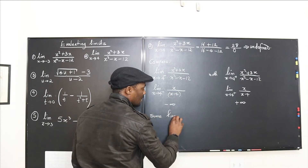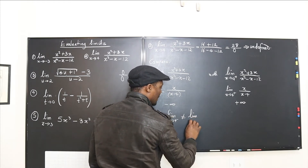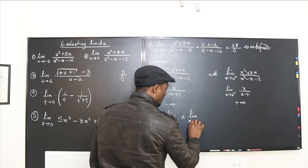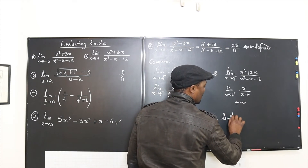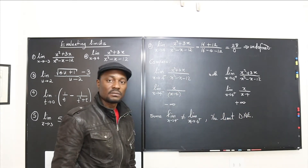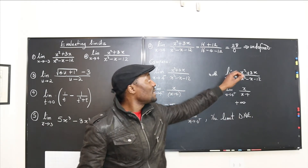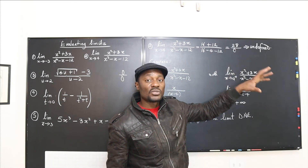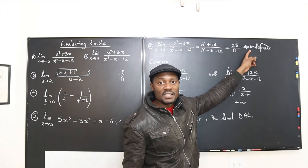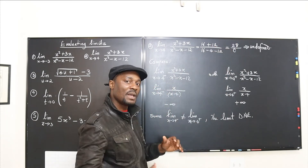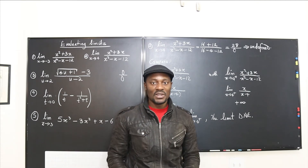Once the limits are not the same, the limit does not exist. Since the limit as x approaches 4 from the left is not equal to the limit as x approaches 4 from the right, the limit does not exist. You must do this every time you get an undefined expression from direct substitution — check one-sided limits and compare the signs.